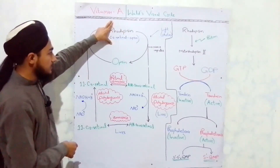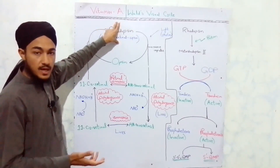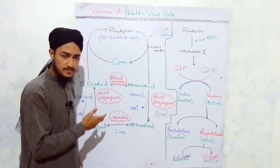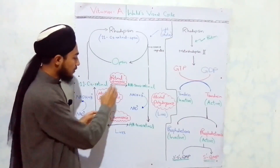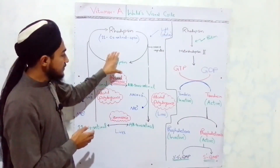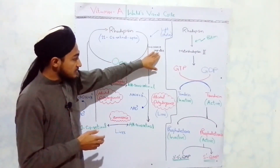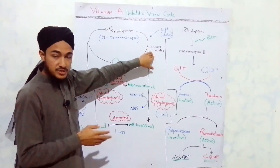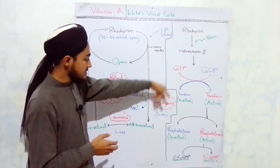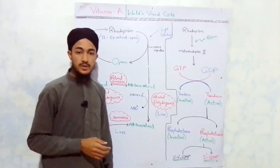That covers the synthesis and cycling of rhodopsin, which is known as Wald's Visual Cycle — how light falls on rhodopsin, how opsin is cleaved off, and how rhodopsin is resynthesized. Now we turn to the actual function of rhodopsin in the propagation and generation of the nerve impulse.